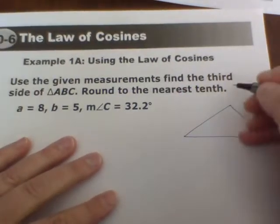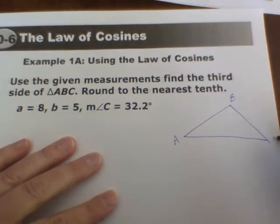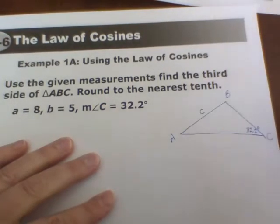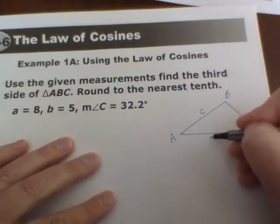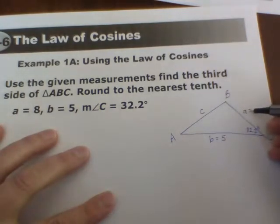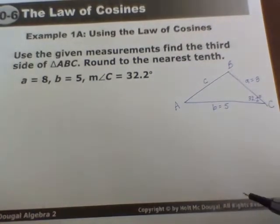we are given that angle C is 32.2. So if we go through naming this, we could have angle A, angle B, and angle C, which we are going to represent as 32.2. This is then side C across, side B we've already got is 5, and side A across here is 8.